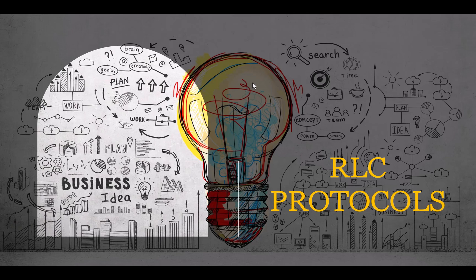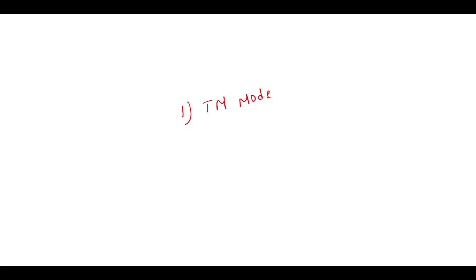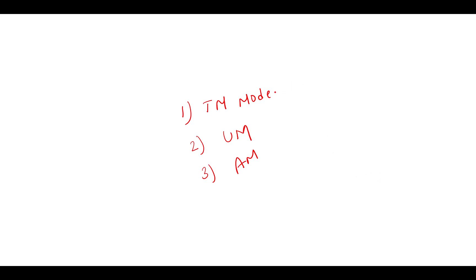If we compare RLC modes, we have three types of communication in RLC protocol. The first is called TM mode, also known as Transparent Mode. The second is called UM mode, also known as Unacknowledged Mode. The third is called AM mode, also known as Acknowledged Mode.